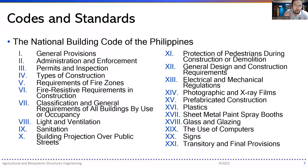Other portions are also defined and specified as code, and should be followed. These include types of construction, requirements of fire zones, fire resistant requirements in construction, and classification and general requirements of all buildings by use or occupancy — different types would have different classifications and requirements.